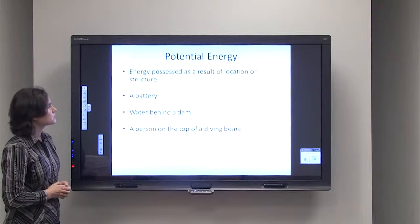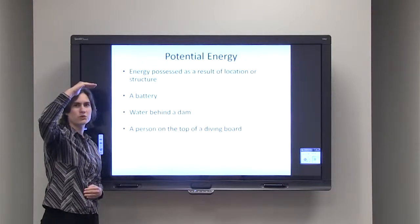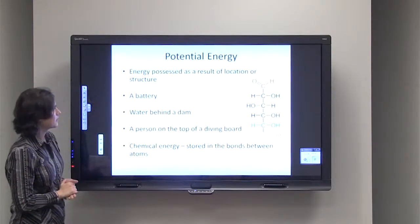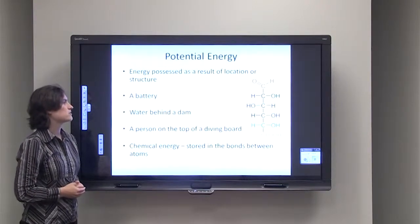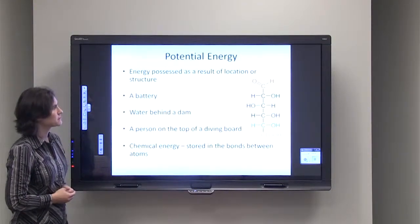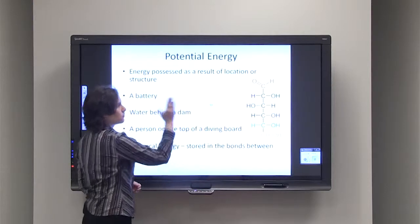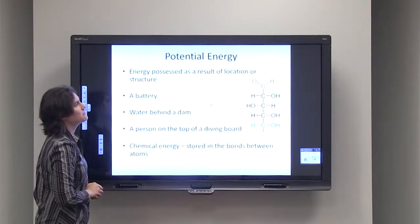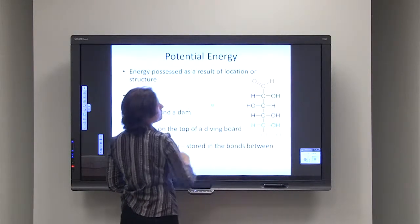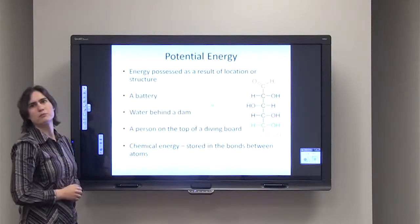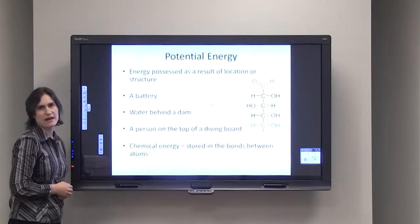You can also think of potential energy as a person standing on top of a diving board — they have a lot of energy because of their height or physical location above the ground. Now another type of potential energy occurs in the form of chemical energy. We have a lot of energy stored in between the bonds of atoms. So you can see over here we've got a hydrogen bonded to a carbon, and if you were to break that bond, you would be able to release energy. Same kind of thing between the carbon and the hydroxyl group — breaking that bond would release a lot of energy. So chemical molecules, because of their structure, also have potential energy.